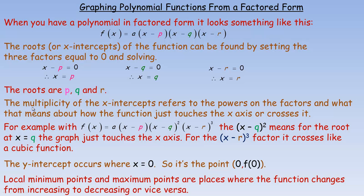It's called the multiplicity of the x-intercepts, which refers to the powers in each of the factors. And what that means is about how the function just either touches the x-axis or crosses it.